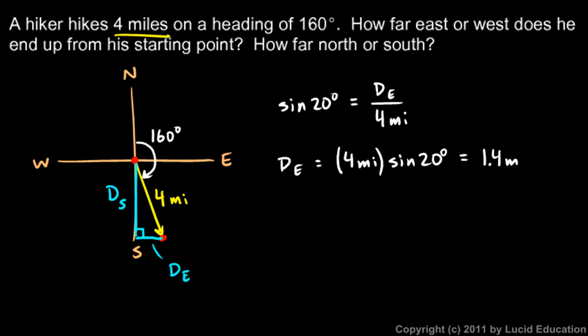And then we can find the distance south with the cosine function. I can say that cosine of 20 degrees, cosine is adjacent over hypotenuse, so for this angle, that 20 degree angle, the cosine has to be D_s over four miles.